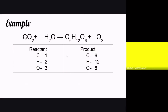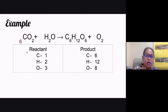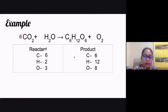On the reactant side we have one atom of carbon; on the product side we have six. What do we multiply by one to get six? Six. So we write a coefficient of six for carbon dioxide — six multiplied by one gives us six atoms of carbon. Carbon atoms are now balanced on both sides.